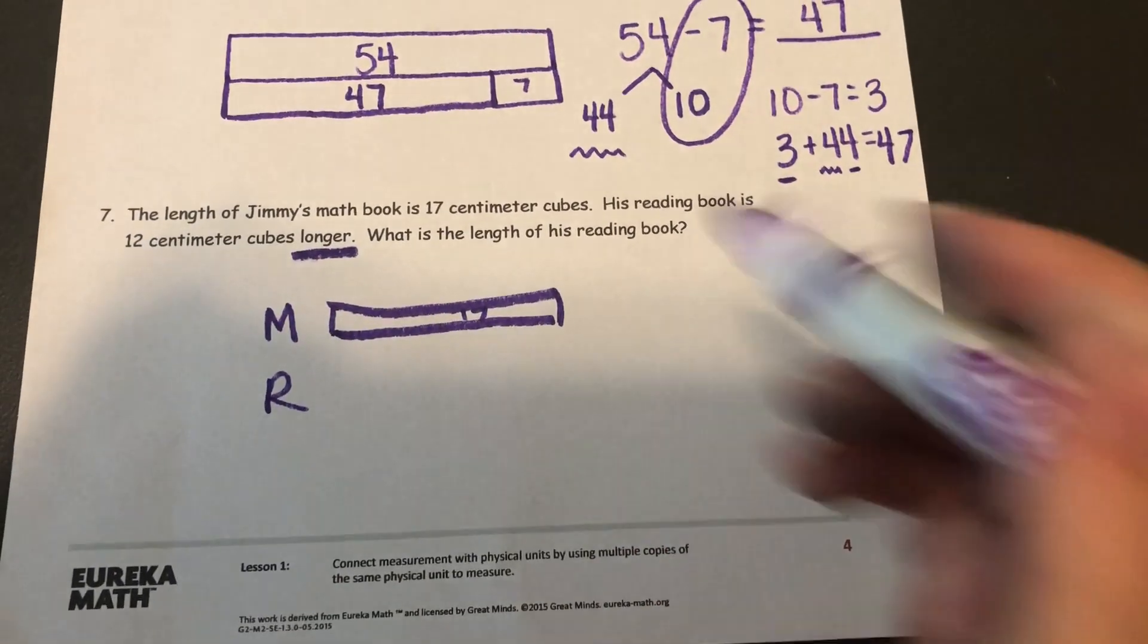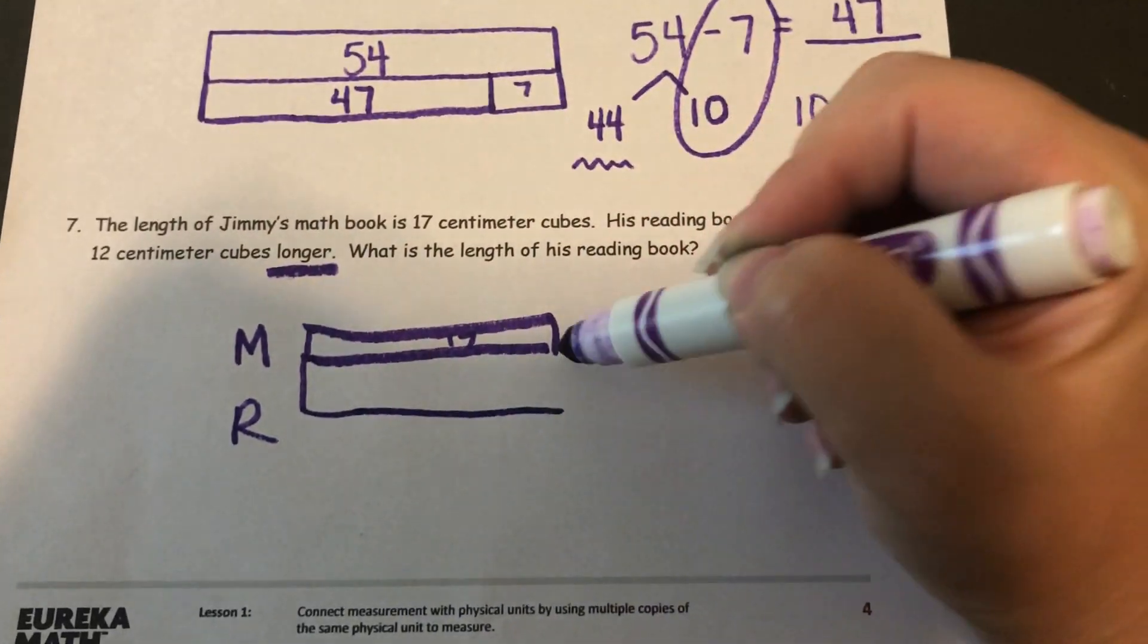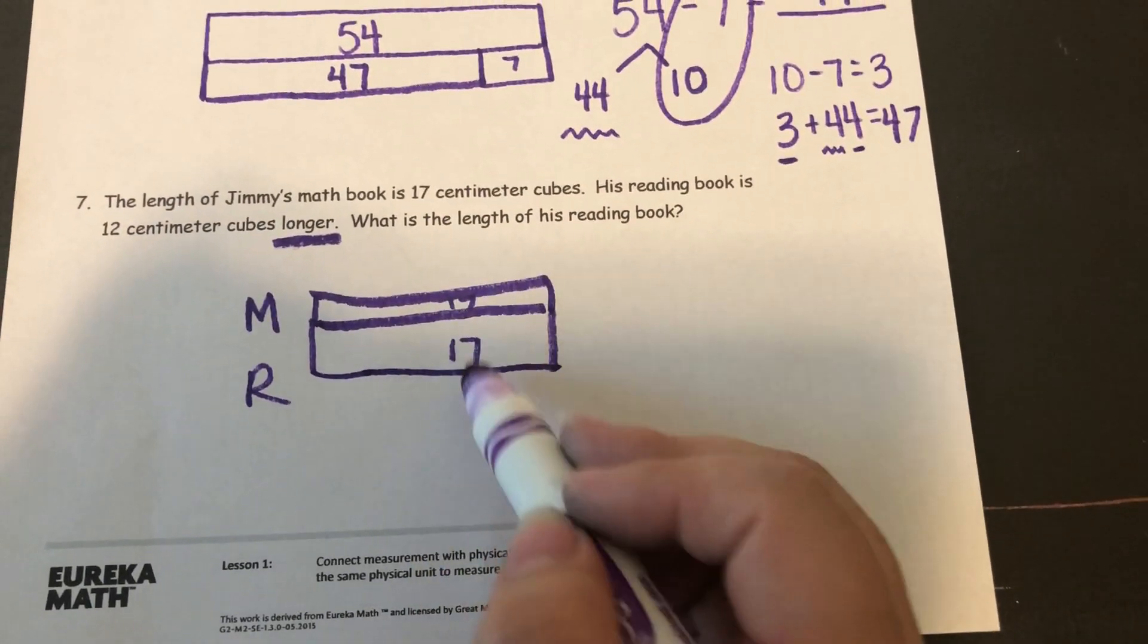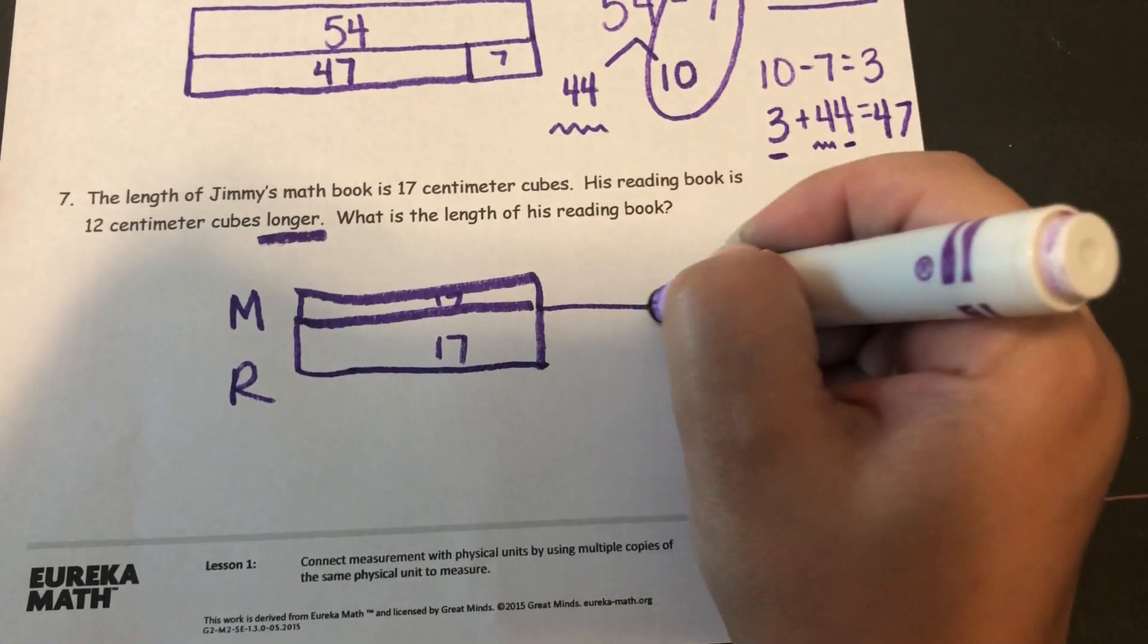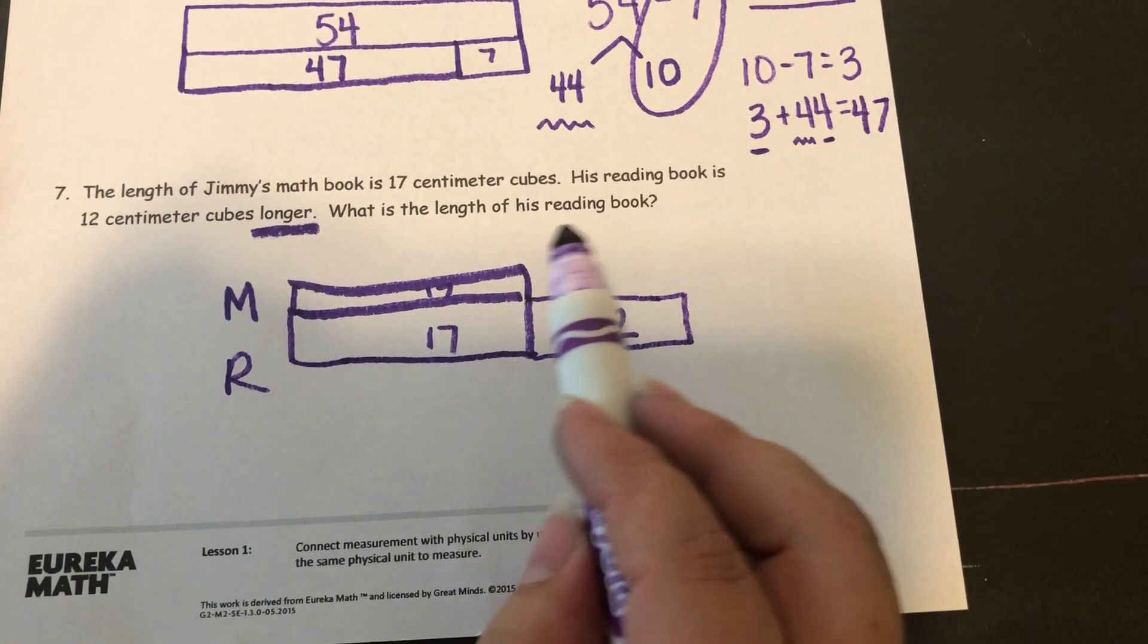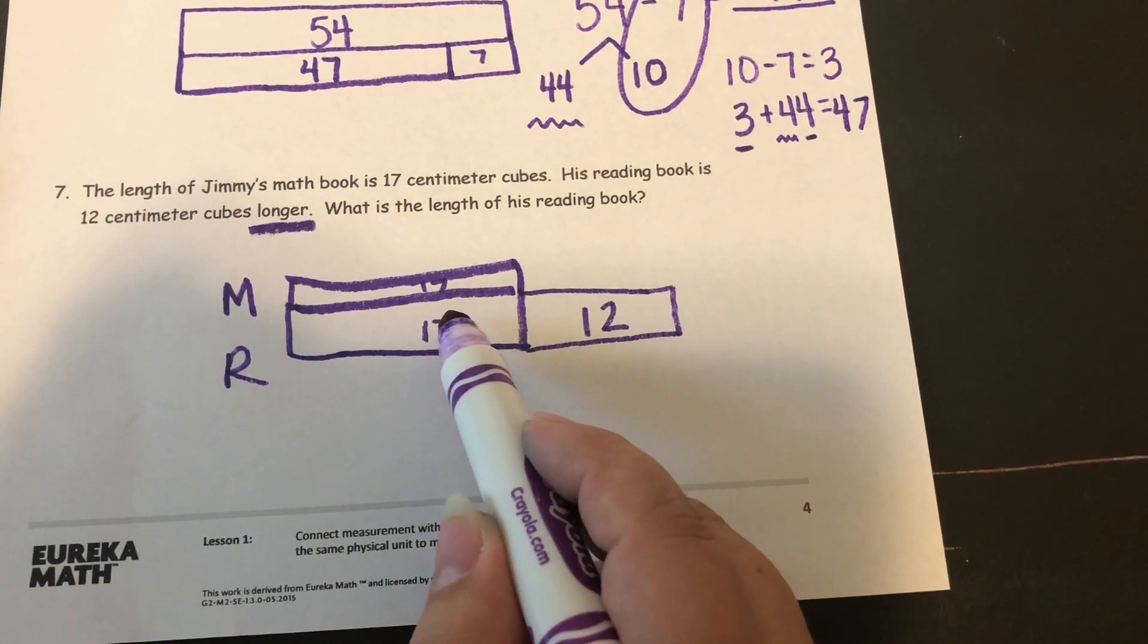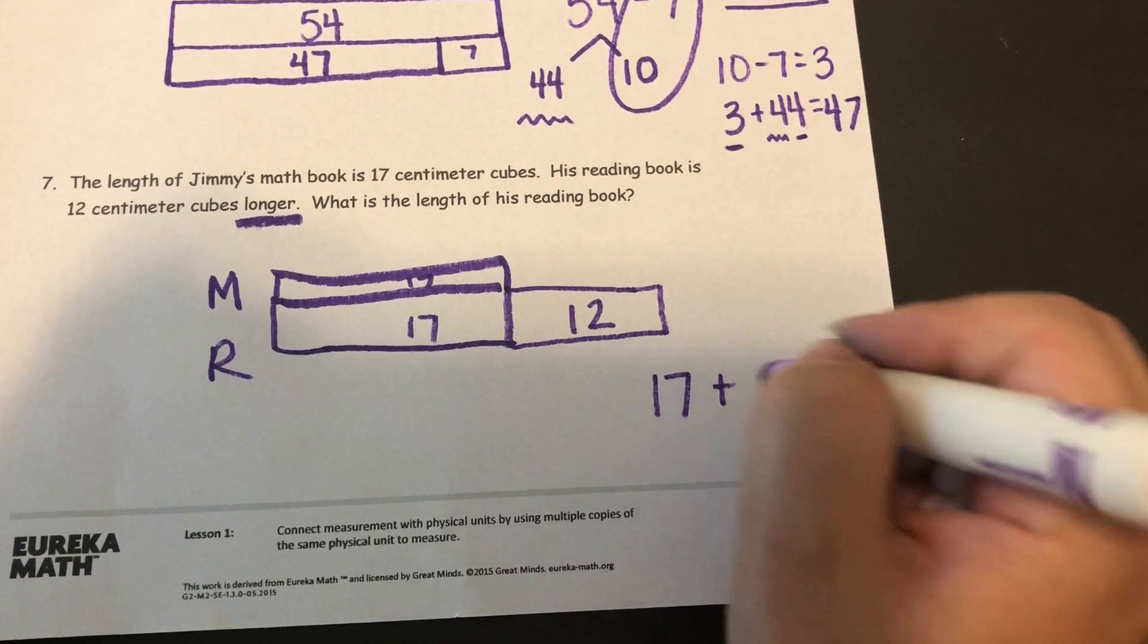So his reading book is going to be first, this same 17 centimeters, and now we need to go 12 centimeters longer than that. So to find the length of his reading book, I need to add my 17 and my 12 together.